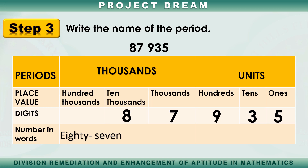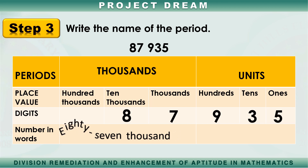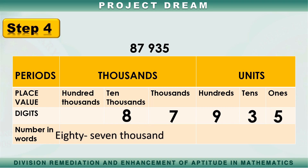Step 3: Write the singular form of the period name. Instead of saying 'thousands,' we say 'thousand.' We are going to write 'thousand' here. So the number in the thousands period is 87,000.